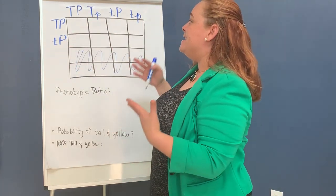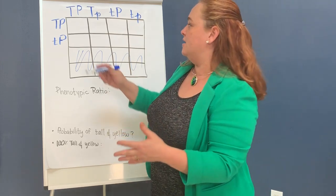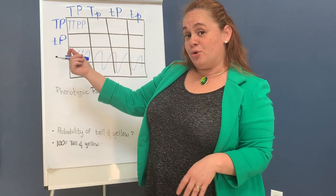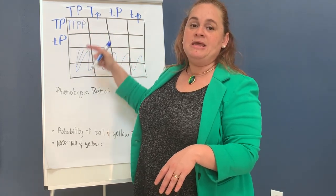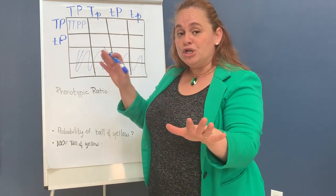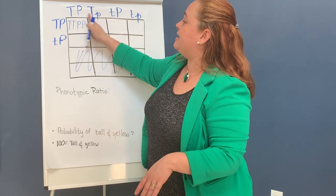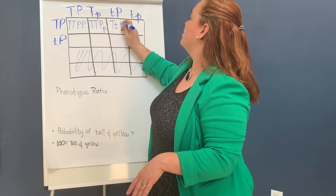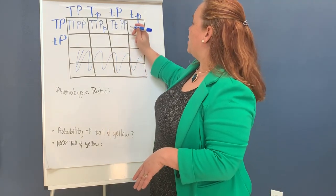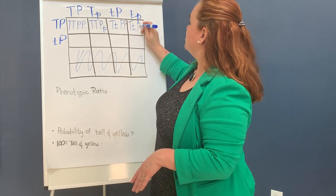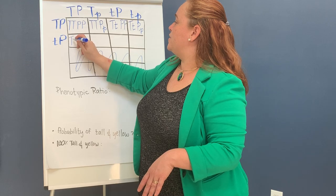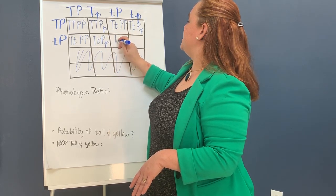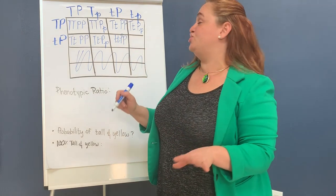Now all I do is the cross multiplication, which you already know how to do. Remember to keep your T's together and your P's together — each allele type should stay paired. Do not write them as TPTP, because it will be hard to count phenotypes later. Match your T's first, then your P's. It's really not complicated once you get the trick — it's a matter of practice.